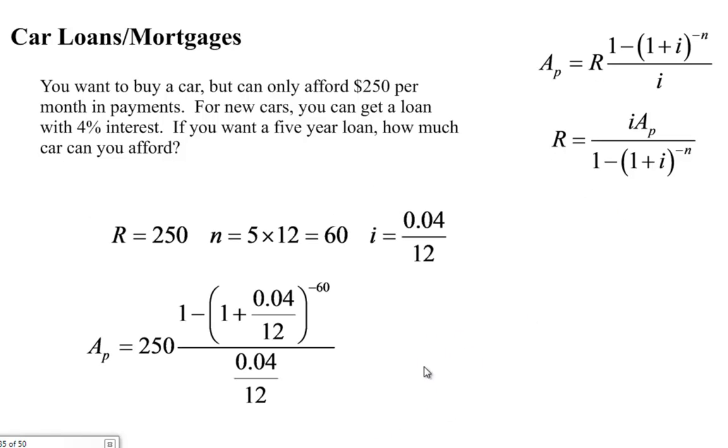So knowing what we know, we plug in everything. A sub P equals 250 which is our monthly payment, times 1 minus 1 plus .04 divided by 12 which is our I value, raised to the negative 60, which is our number of payments.